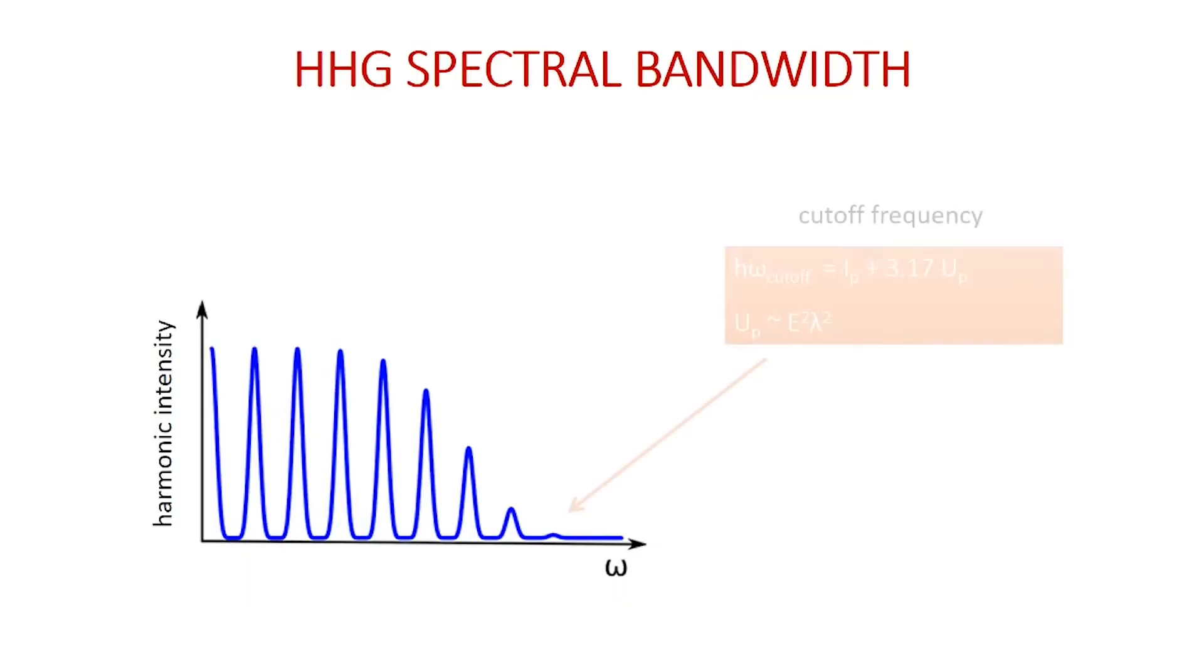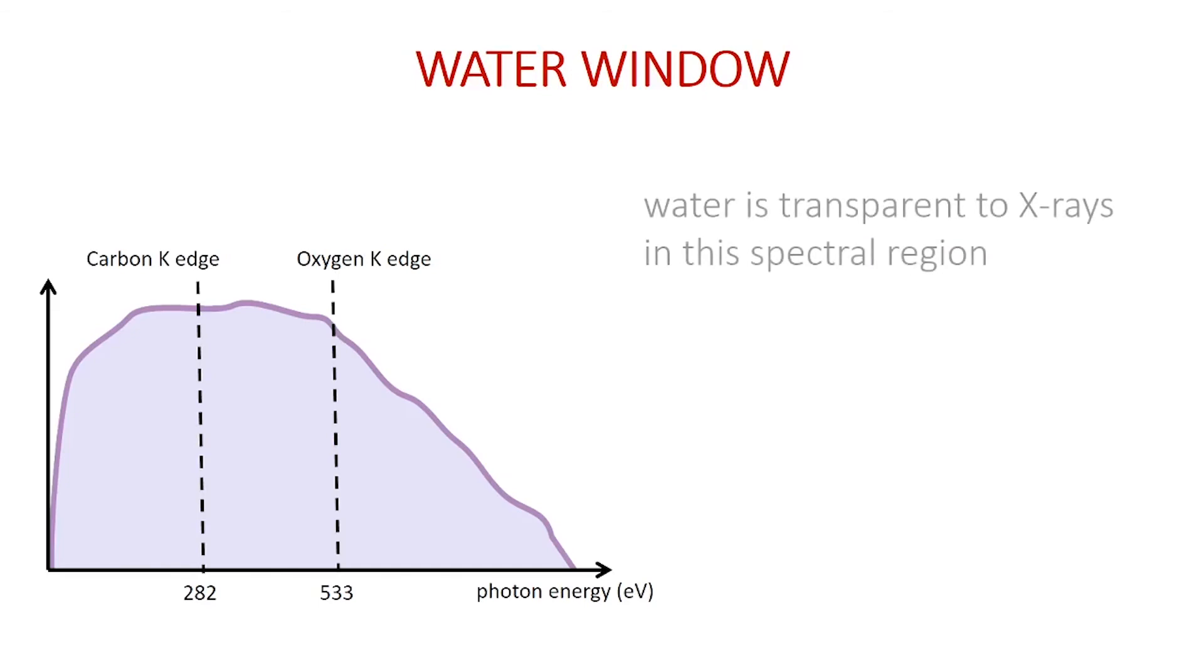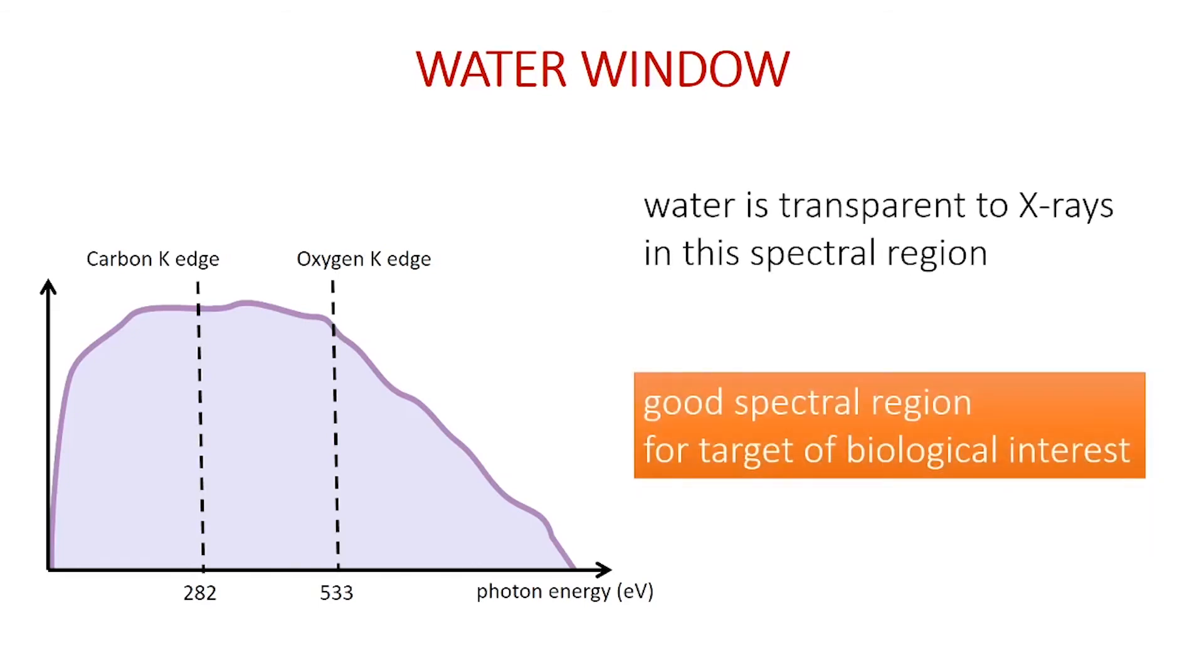the maximum photon energy and spectral bandwidth that can be achieved increases with the wavelength squared of the driving laser. Thus, the use of driving lasers with longer wavelengths allows the generation of isolated attosecond pulses up to the water window. This spectral region is the one between the carbon K-edge at 280 eV and the oxygen K-edge at 540 eV.